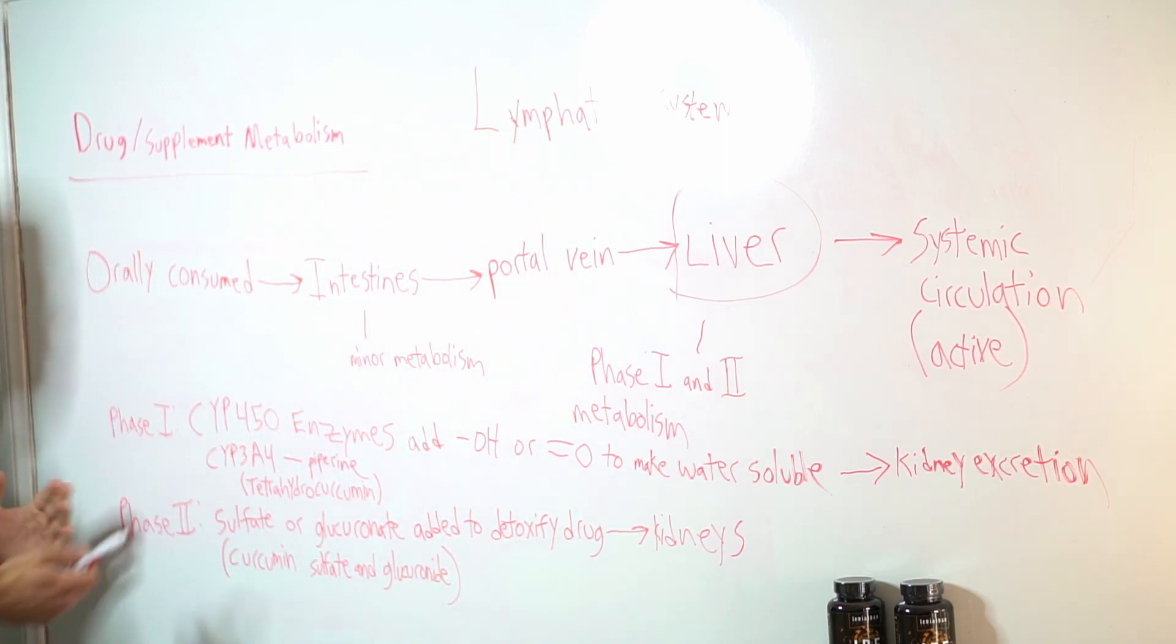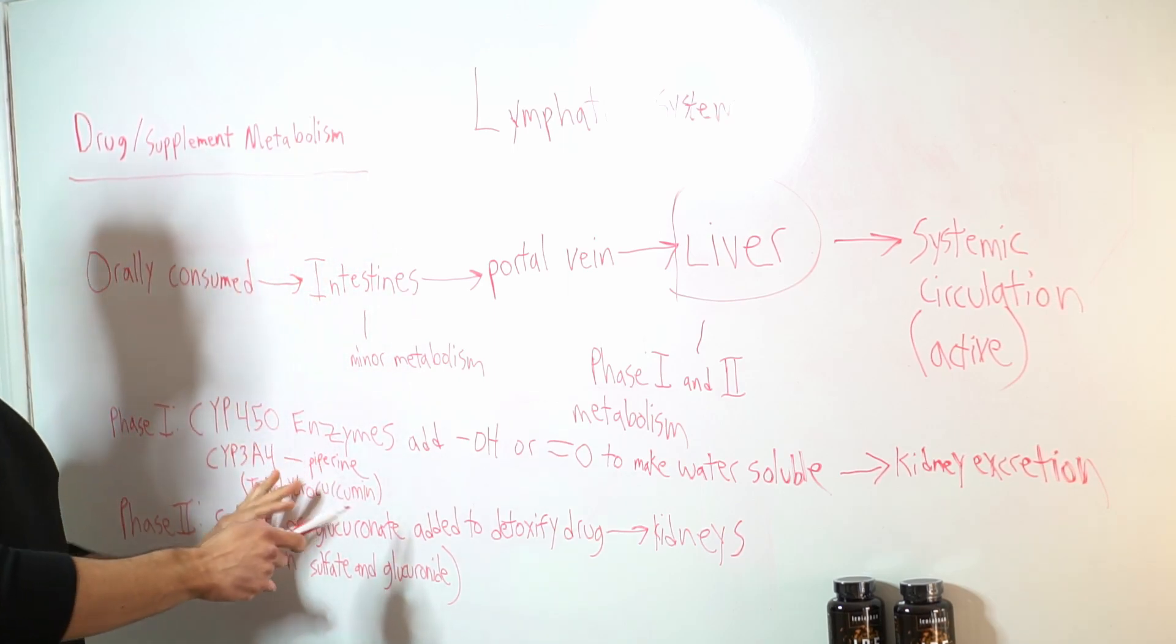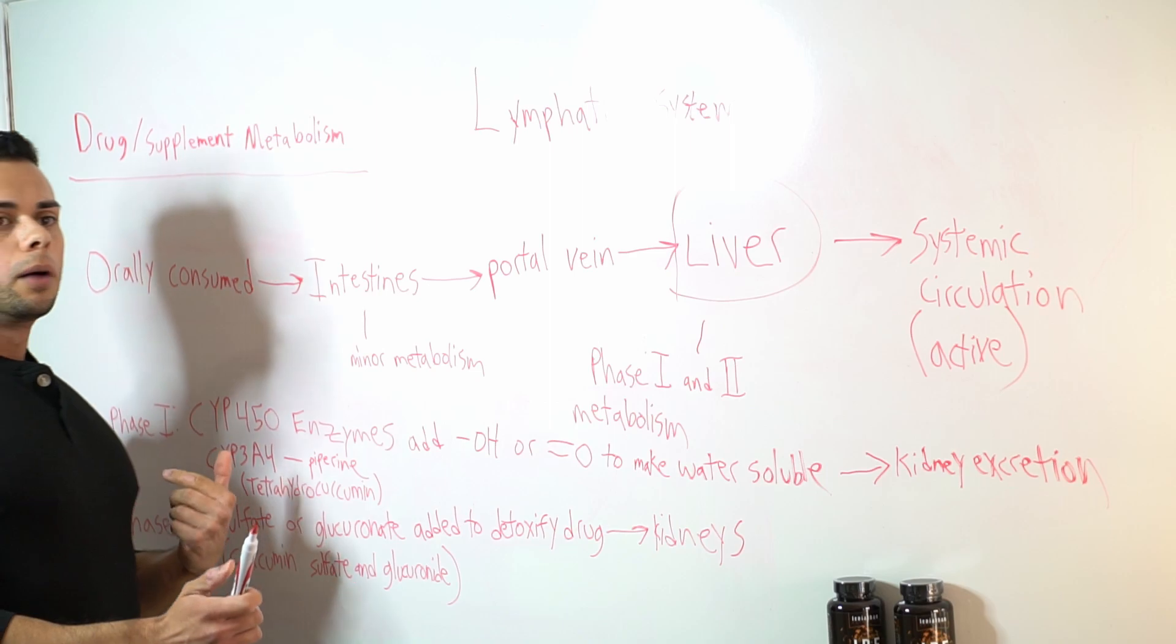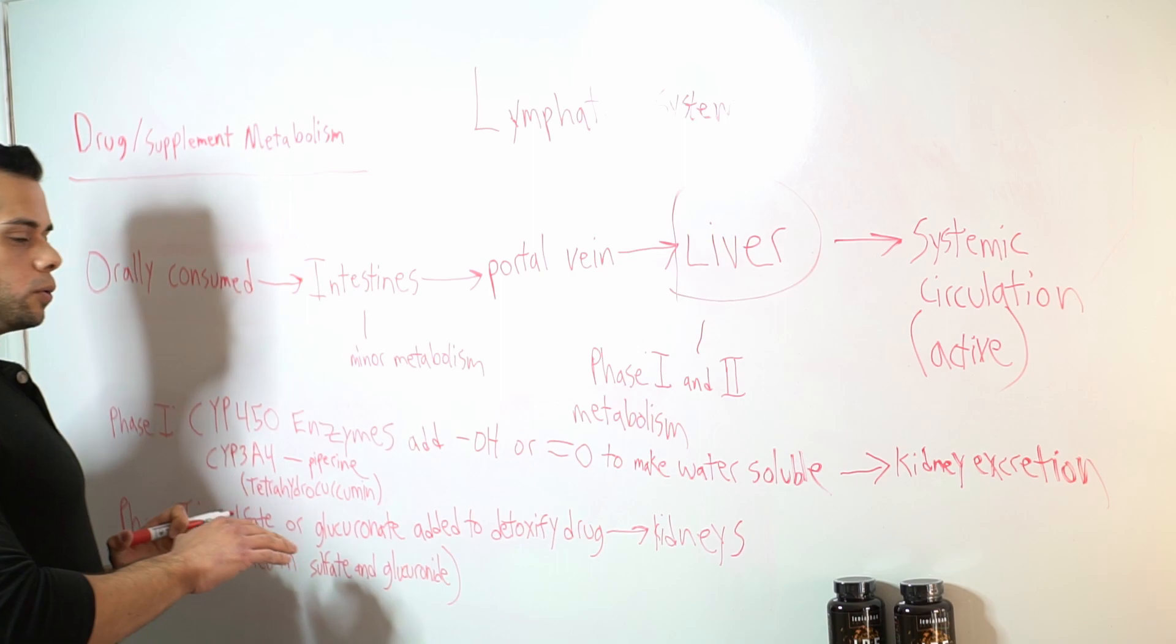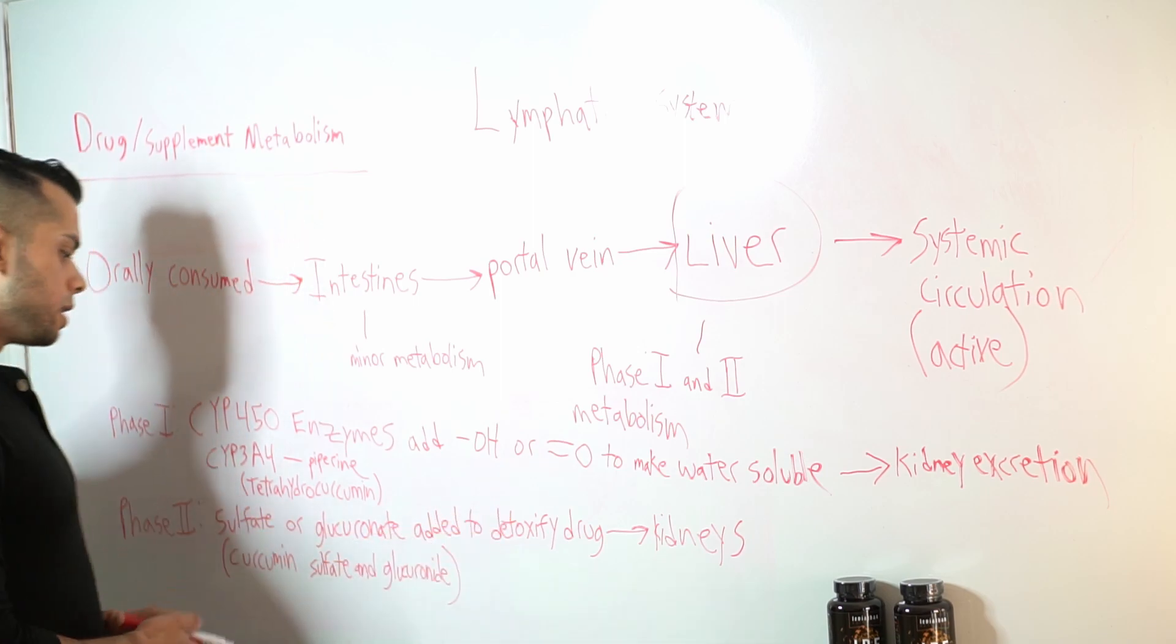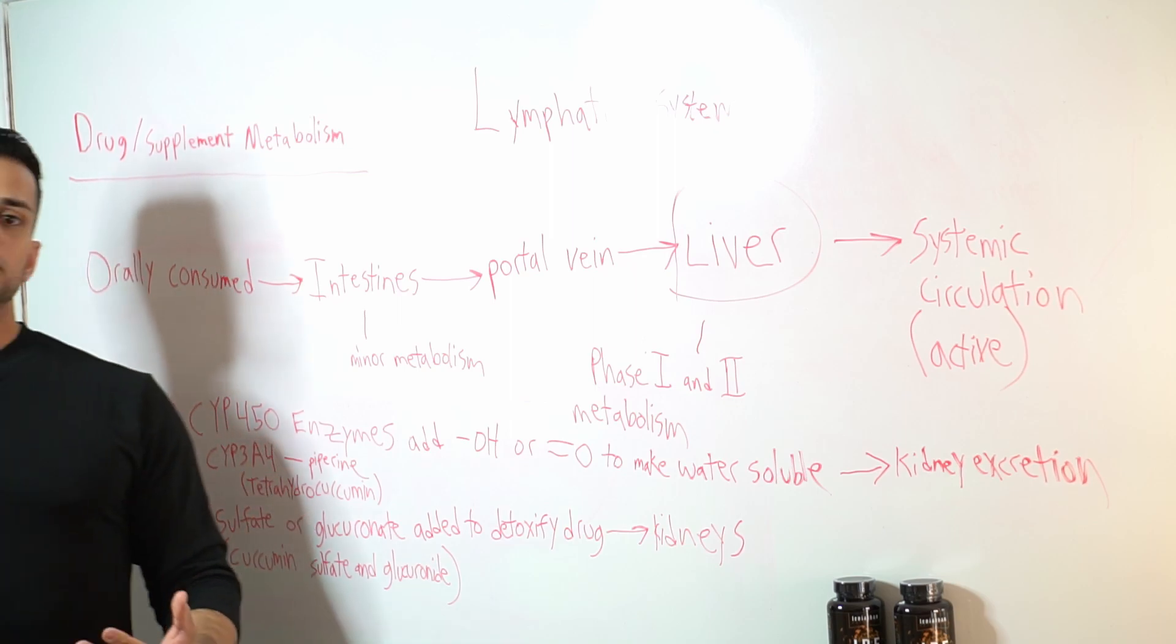So now here we go to phase two drug metabolism. And the purpose here of phase two is much like phase one, where the body is getting the drug or product to become excreted by the kidneys, but here we have specific transferase enzymes working.